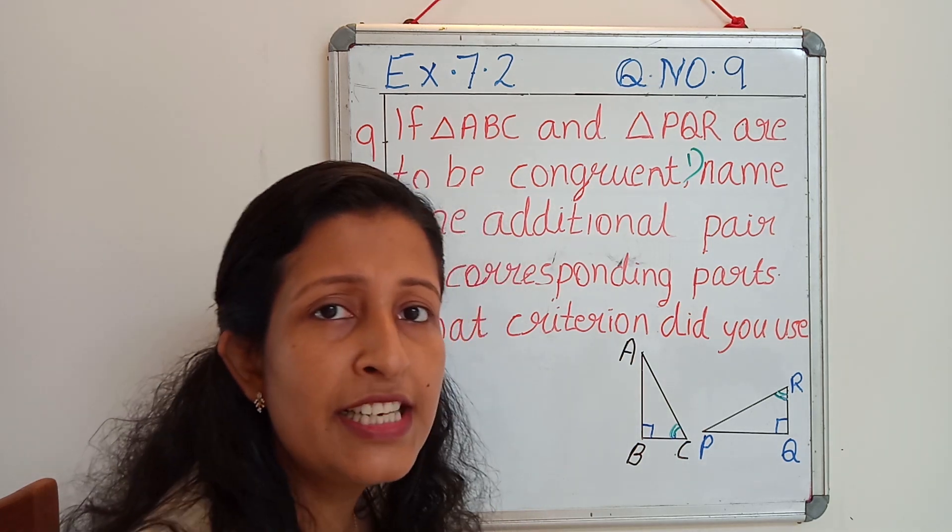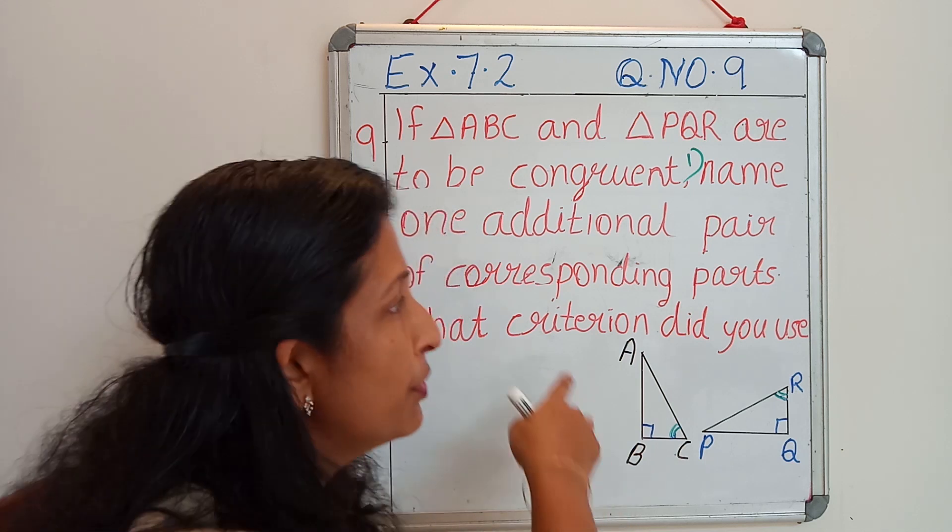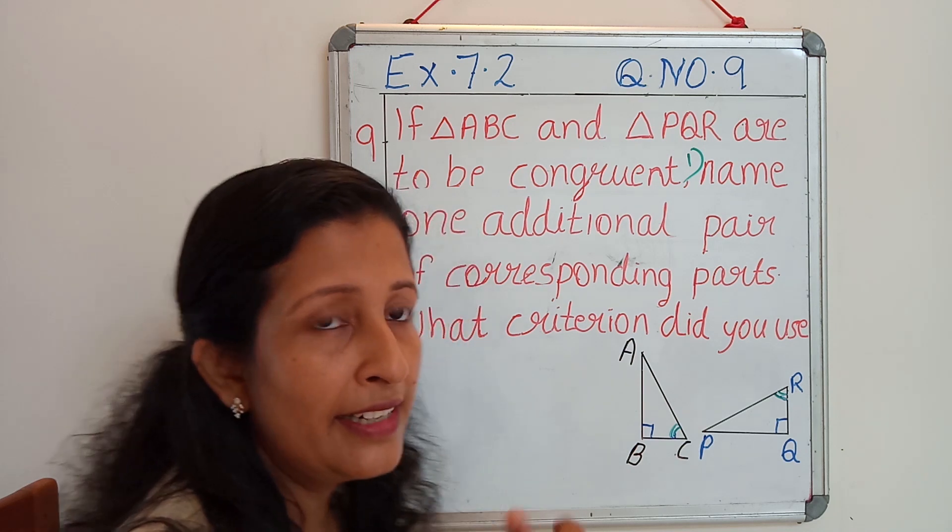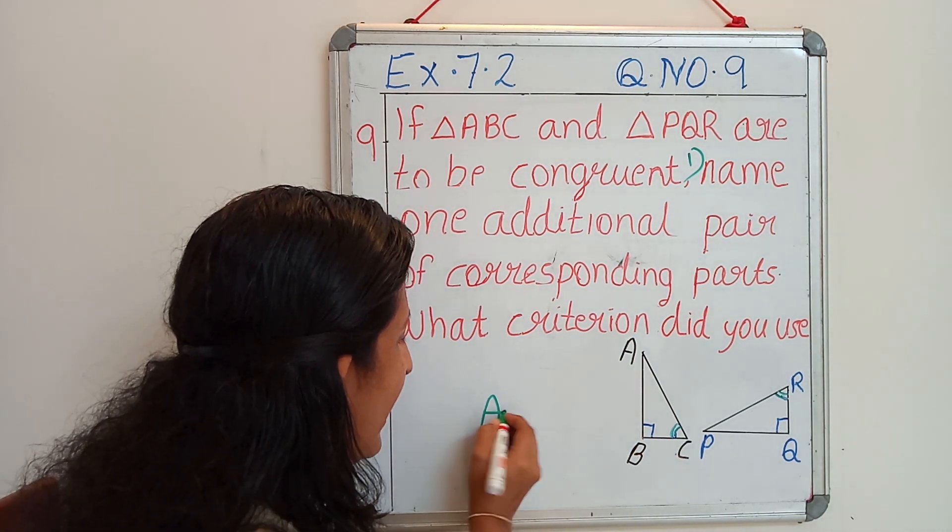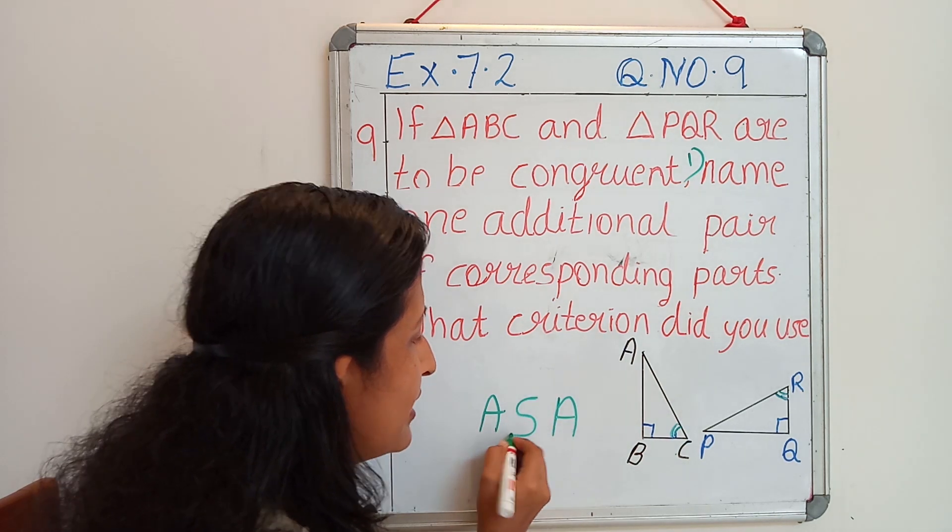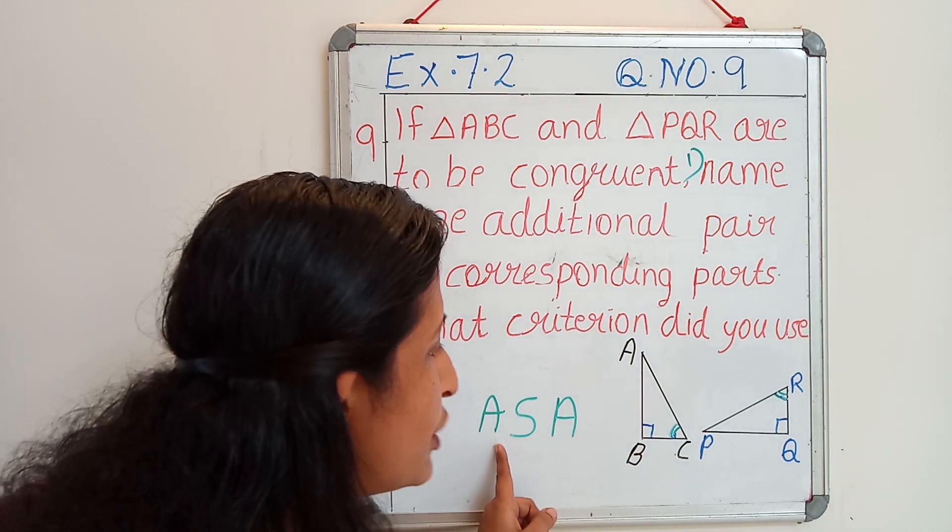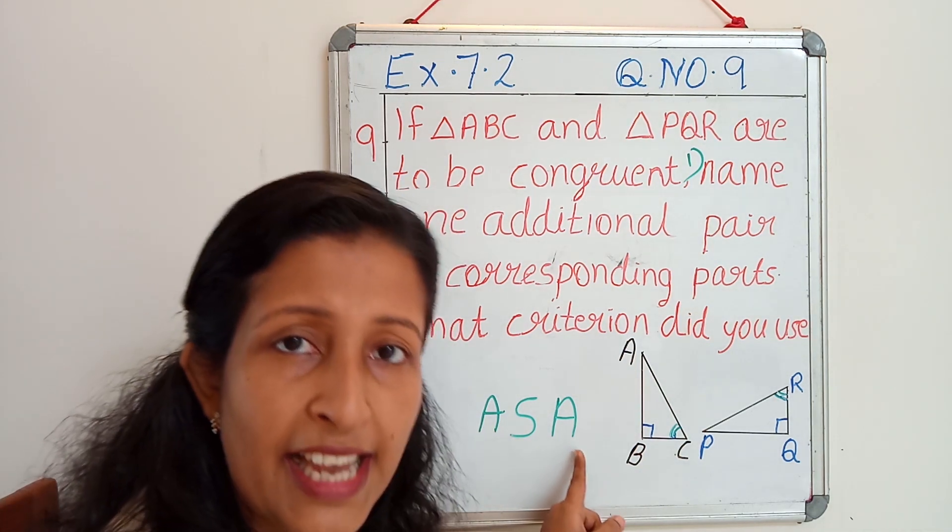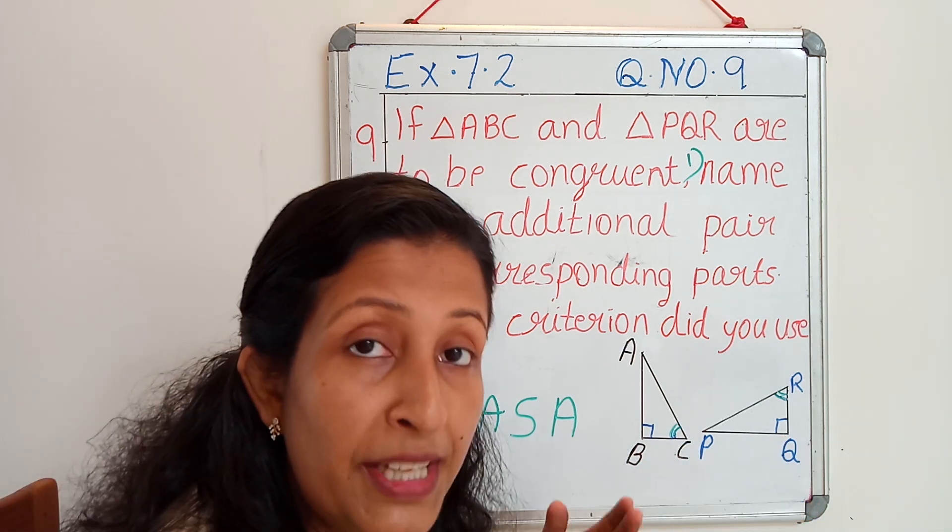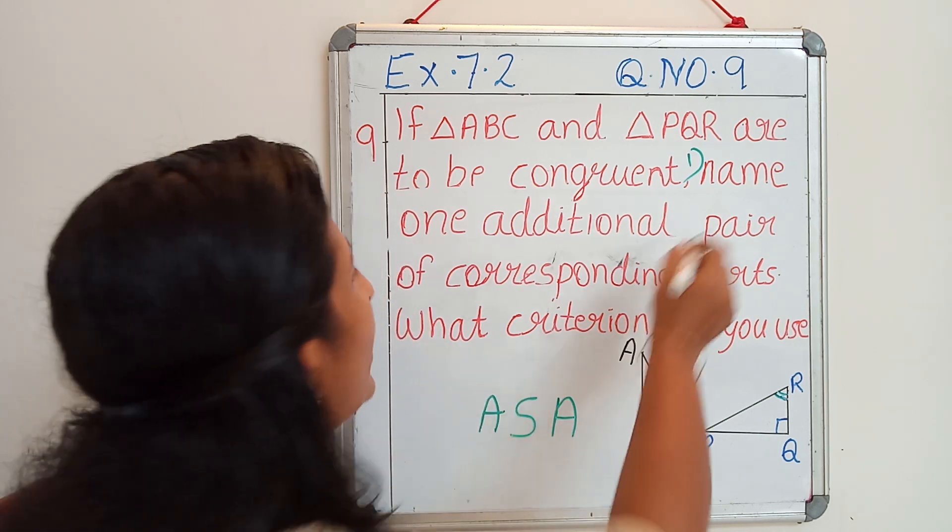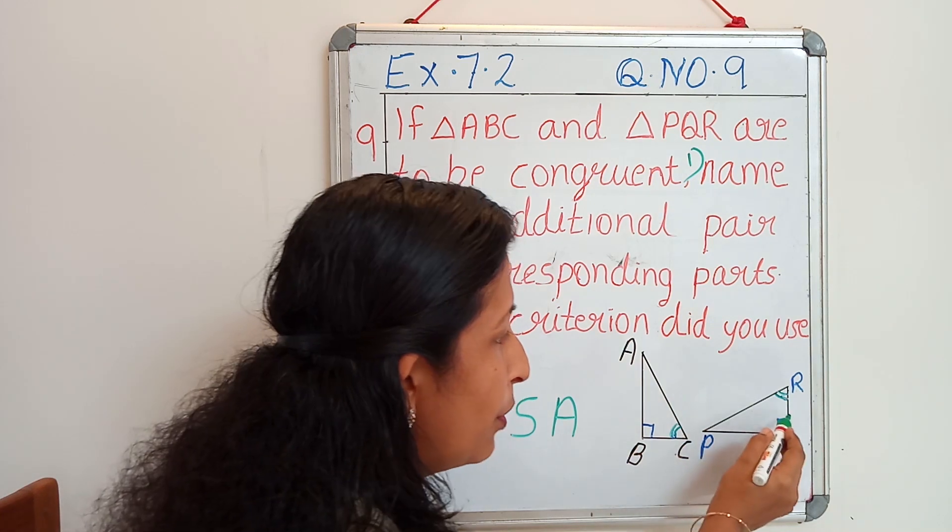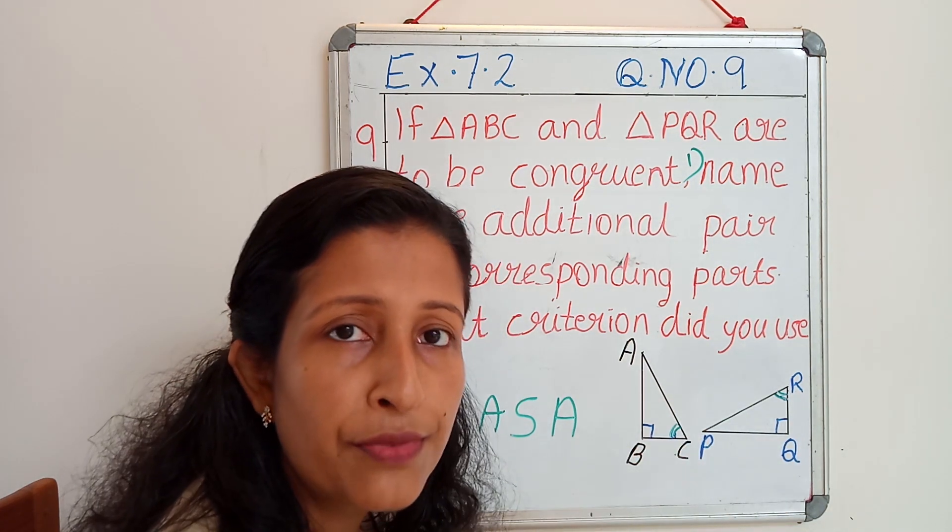What should be the criterion that we have to use for proving this congruency? Two angles mean A and A, in between these two angles, one side. The criterion should be ASA criteria because we got two angles. What should be the extra criterion? What should be the additional pair of corresponding parts that we have to include for proving the congruency of these two triangles?